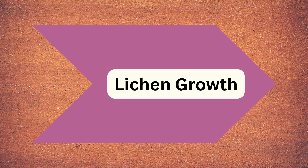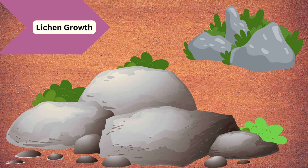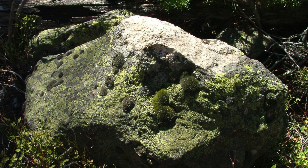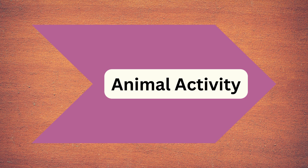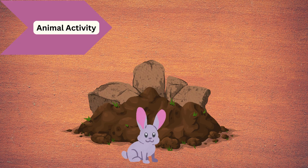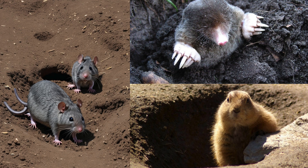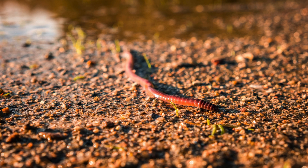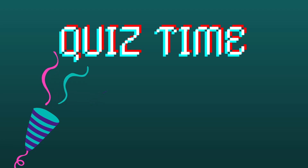Next is lichen growth. Lichen is the green patches around the rock that produce acids which chemically weather the rock surface. Then there is animal activity — burrowing animals like rabbits, rats, moles, and groundhogs disturb the rock and soil, increasing exposure to the weathering process. Earthworms also mix soil and break down small rocks as they burrow.